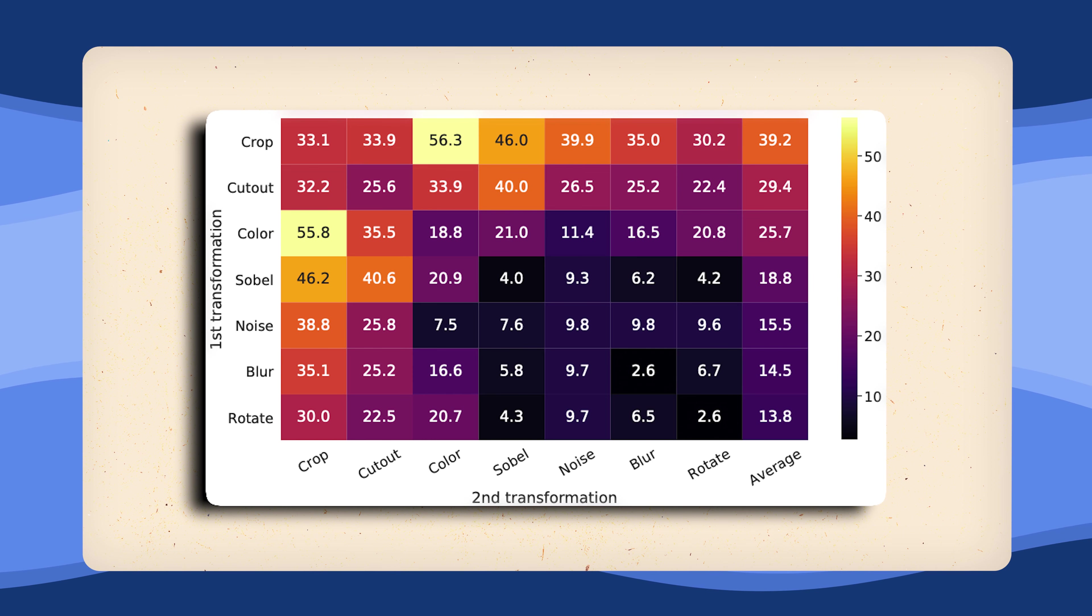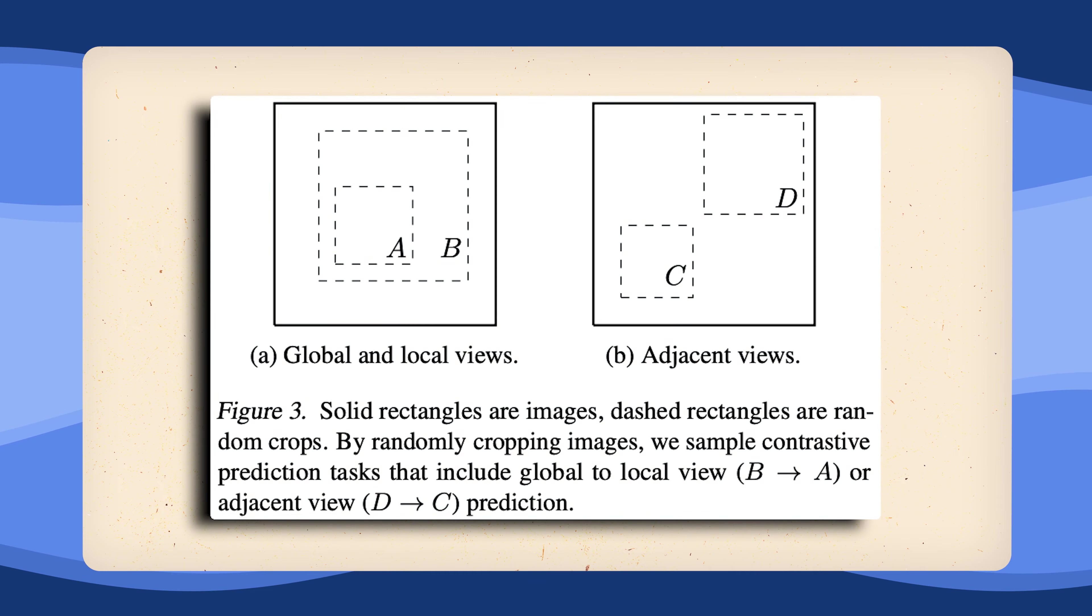And we can clearly see that some augmentations increase the accuracy significantly more than others. We can see that cropping out a part of the image and resizing it overall seems to be very important. But cropping in combination with color distortions is the best combination.